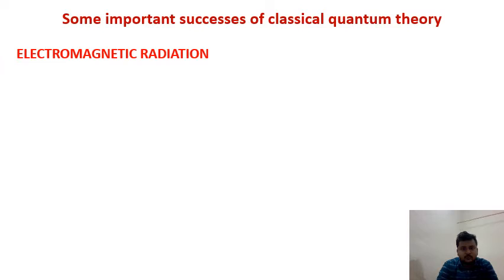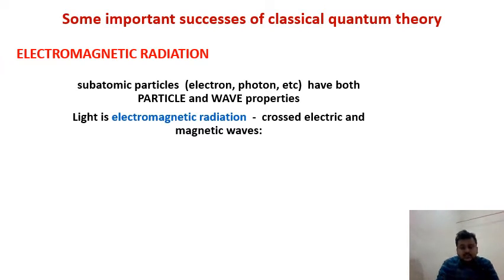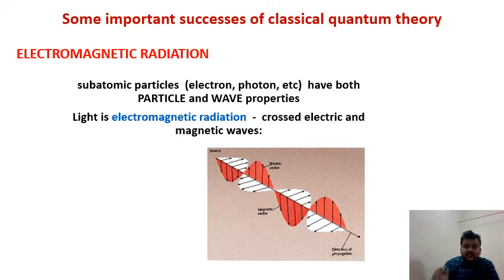First I will talk about some important successes of classical quantum theory. Classical quantum theory deals with the electron as a particle — in the older quantum mechanics, the electron is considered to be a particle. So what is electromagnetic radiation? It consists of waves propagated in the electromagnetic field, propagating through space carrying electromagnetic radiant energy. This light is electromagnetic radiation, composed of an electric field and a magnetic field. This wave of electromagnetic radiation has two components: the white-shaded area shown below is the magnetic component of the light.